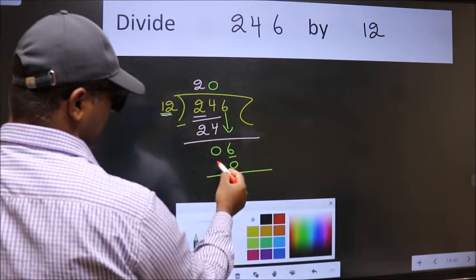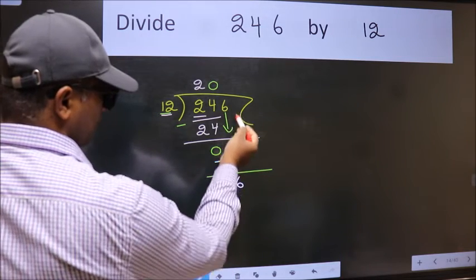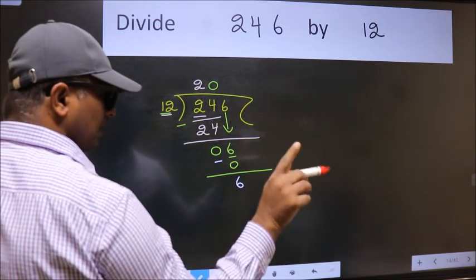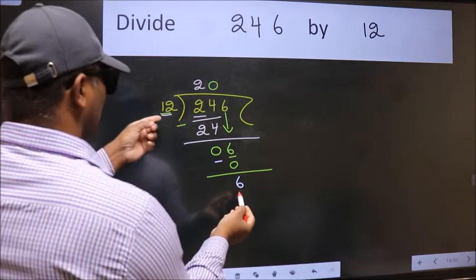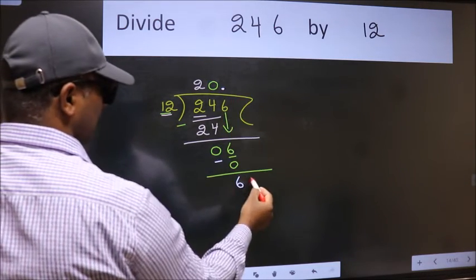Now we subtract. We get 6. Over here, we did not bring any number down. And 6 is smaller than 12. So now we can put a dot and take 0.